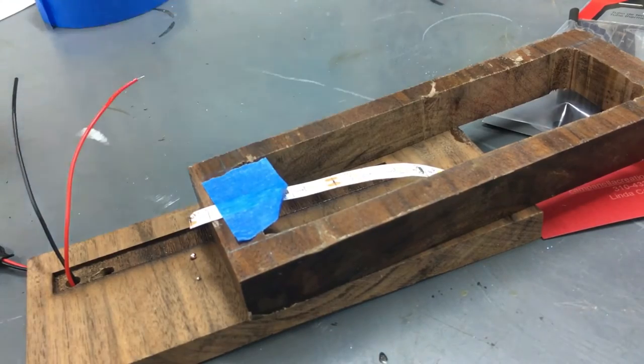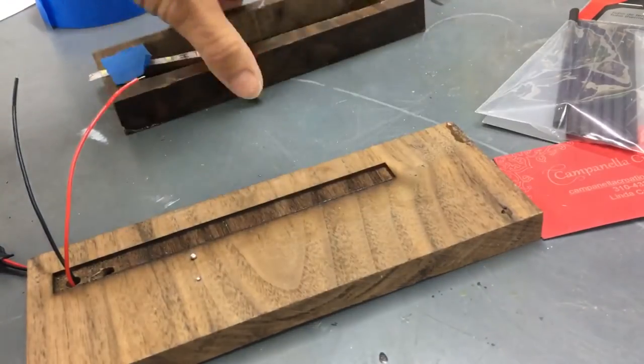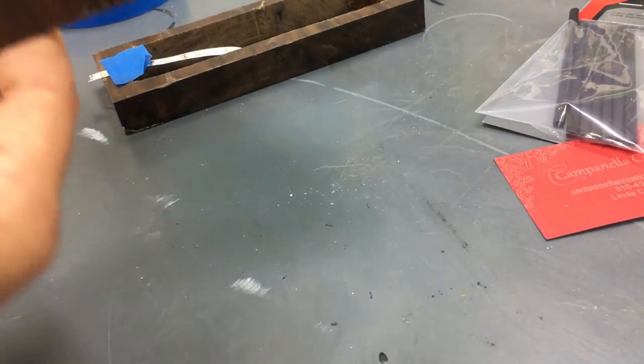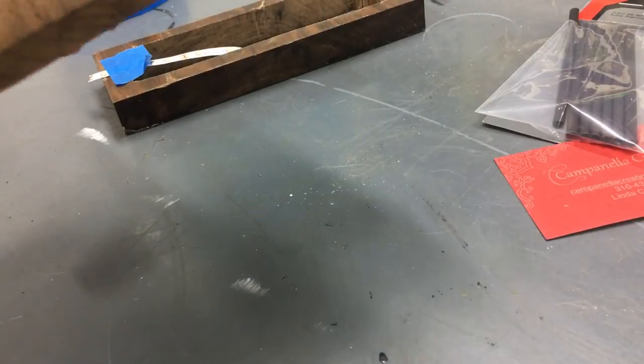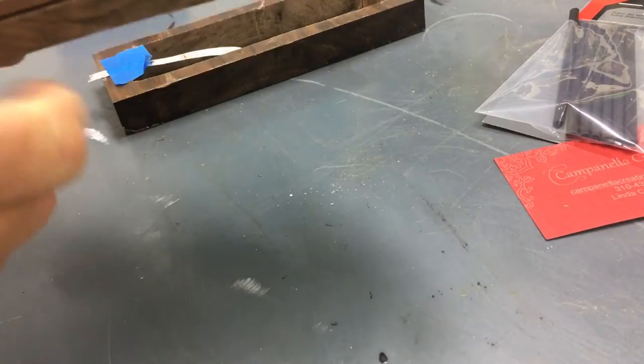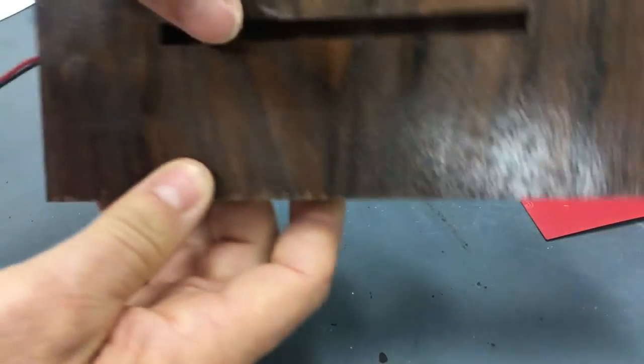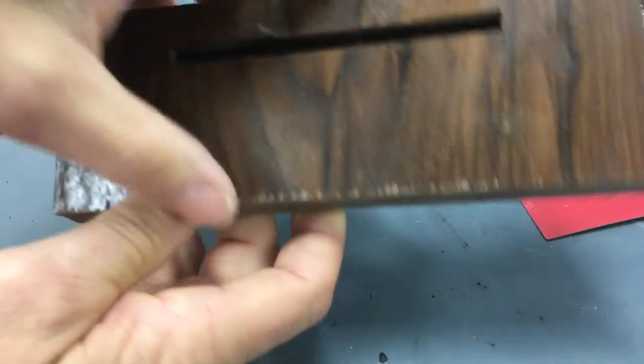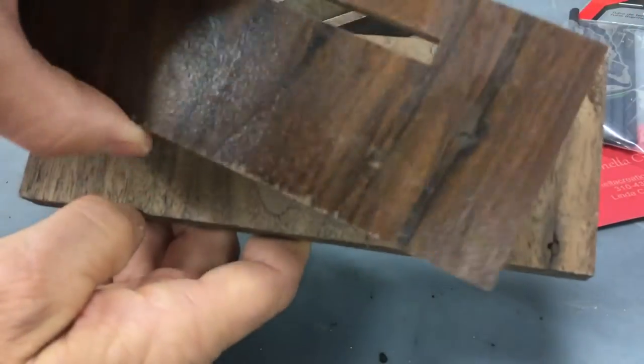I took some old flooring, sliced a little sliver off the top. This is where my acrylic is going to sit in here. I'm going to sand this all down, it's coated right now.